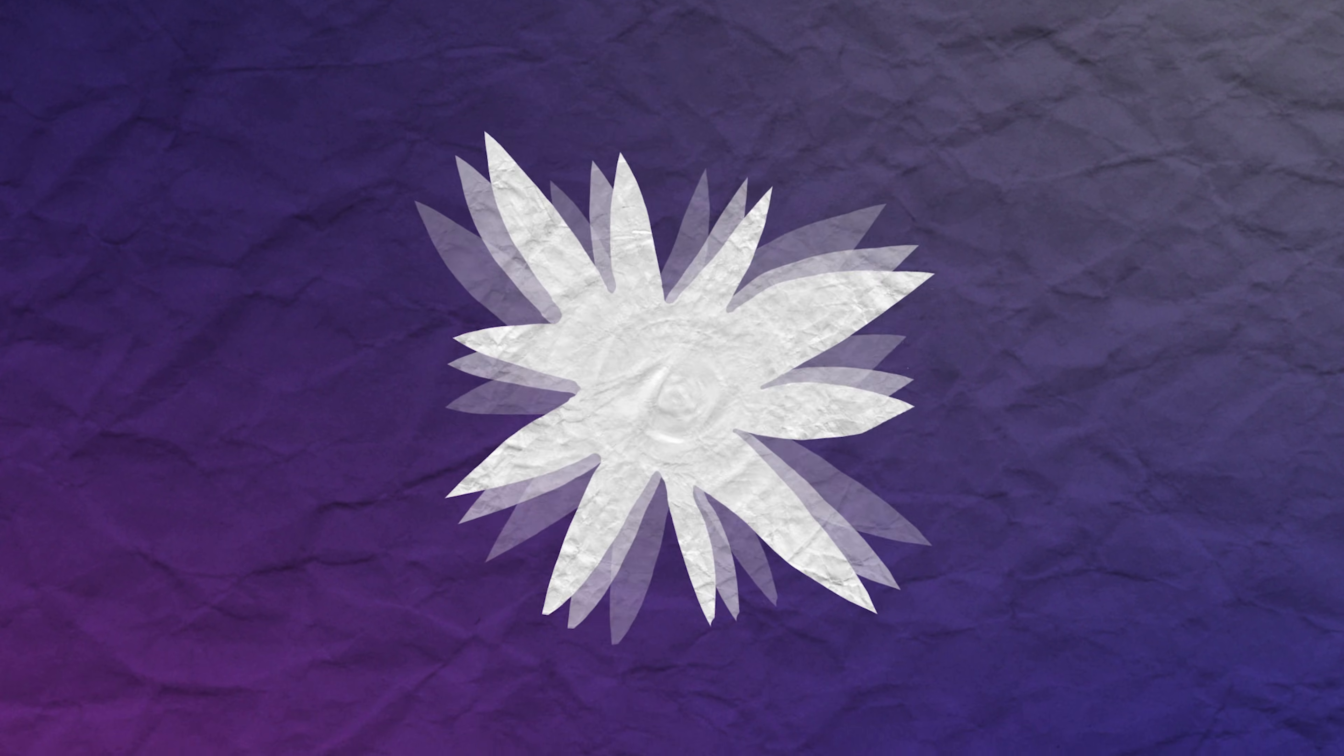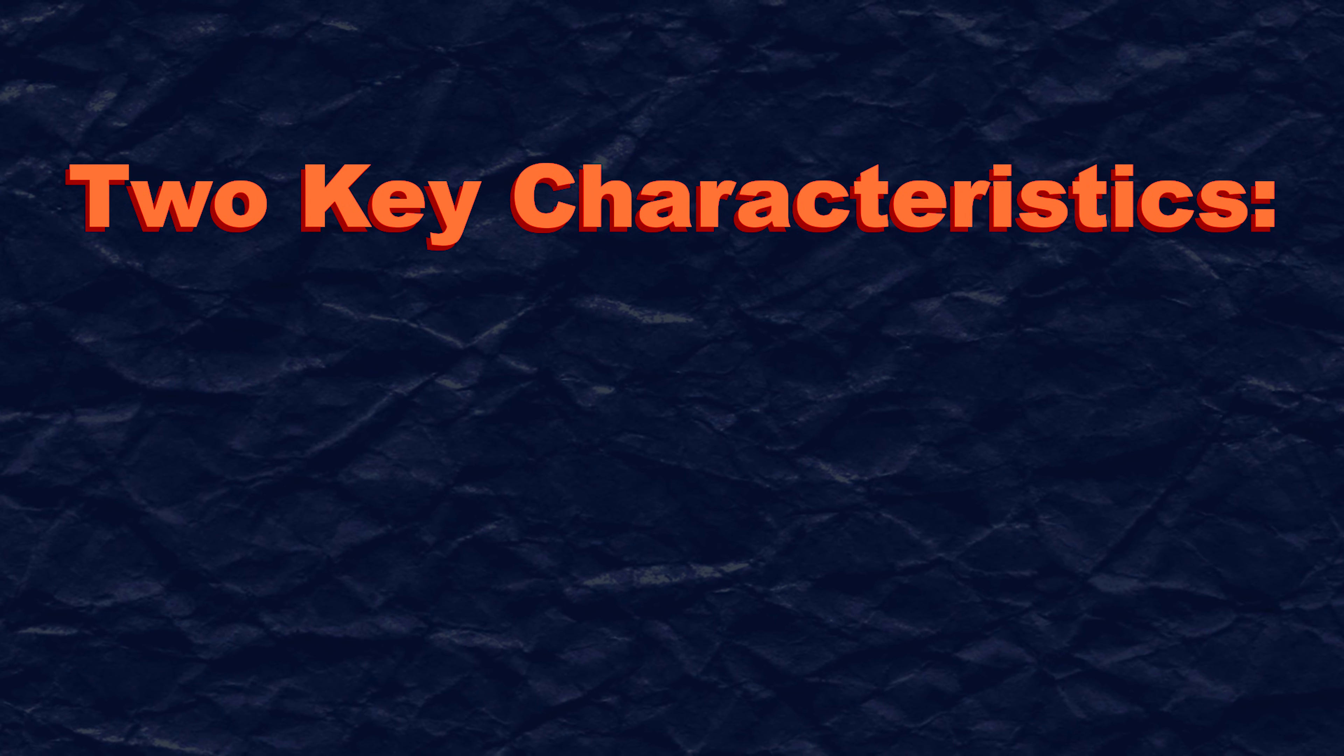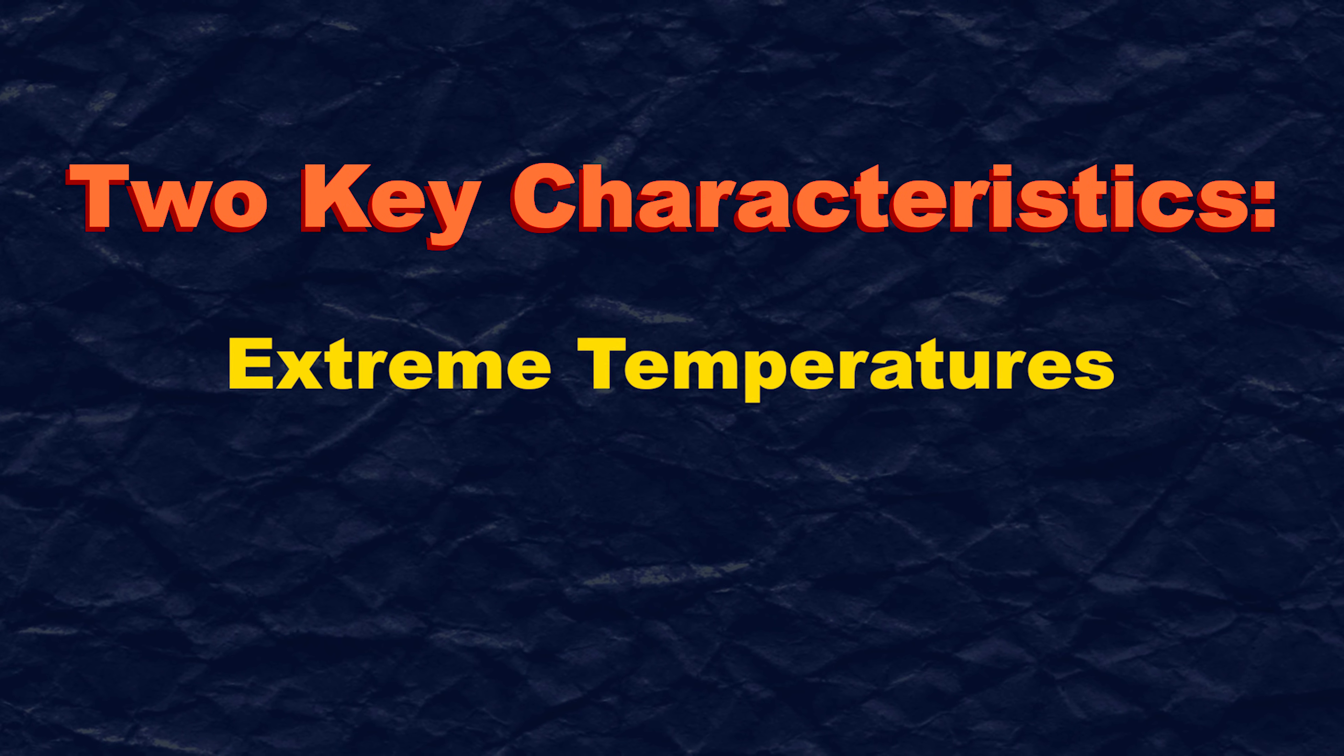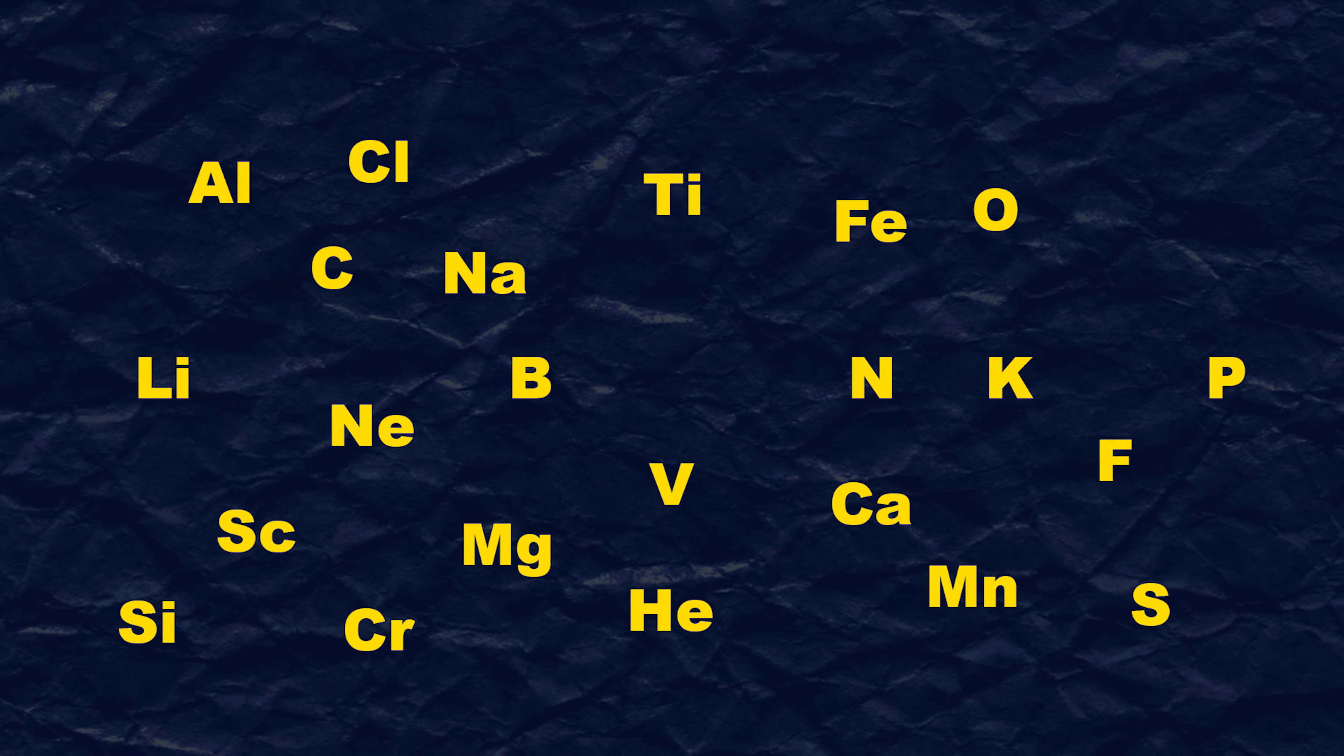So where did the other elements come from? Supernova nucleosynthesis. During a supernova explosion, there are two things that make it possible for elements heavier than iron to be made: extreme temperatures and an abundance of neutrons. Supernova nucleosynthesis is responsible for all of the heavier, naturally occurring elements.